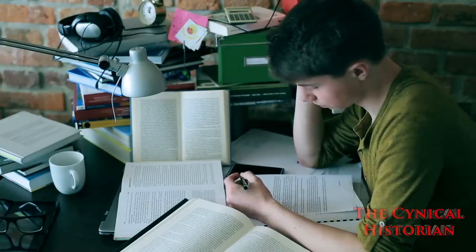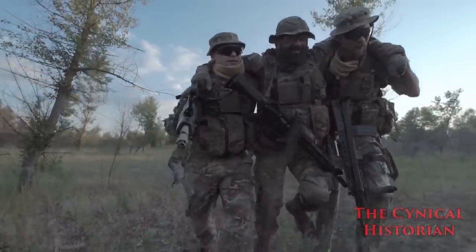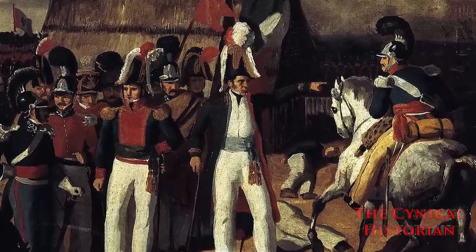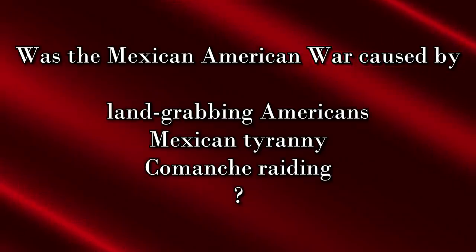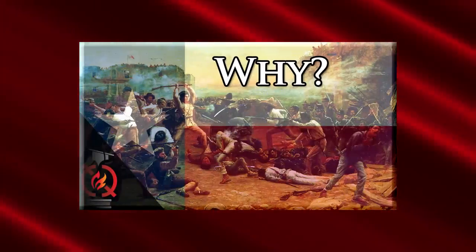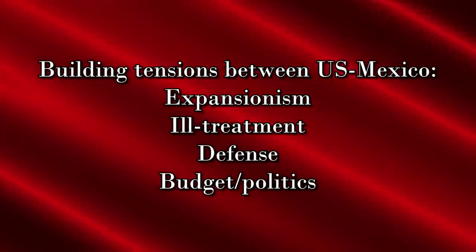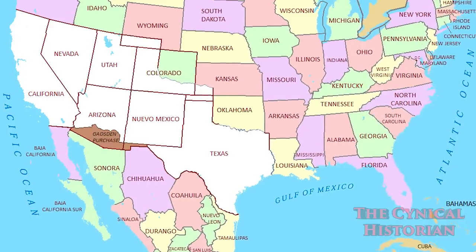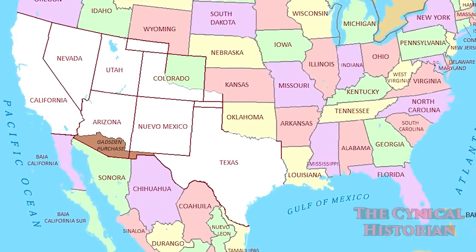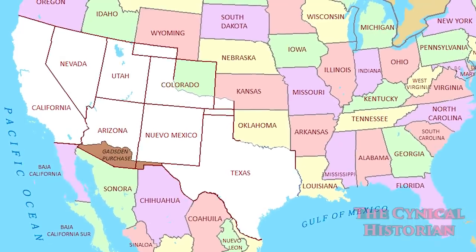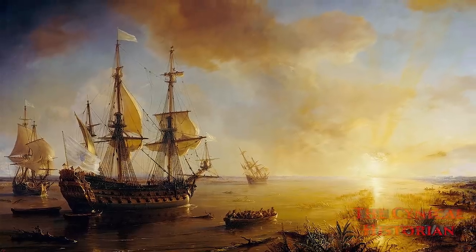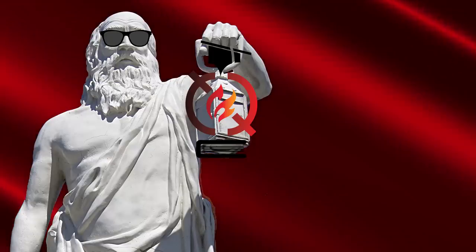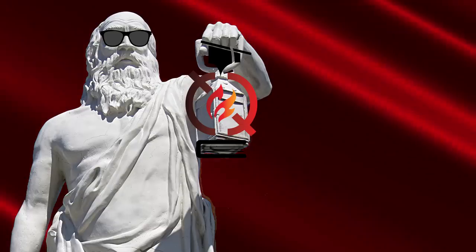That Civil War would ultimately be caused by arguments over slavery in the new territories, so understanding what caused the Mexican-American War is part of the issue surrounding the Civil War itself. As anyone studying warfare can tell you, there is no simple answer to the causes. Was it the US trying to grab land from Mexico? Was it a reaction to Mexican tyranny or Comanche raiding? Instead, we can see the buildup of tensions between the US and Mexico over expansionism, ill-treatment, defensive needs, and budgetary or political necessity. The annexation was not merely the taking of land, for it was paid for, and could have been much more if the US so chose. There was a long history of disputed territory, popular revolts, and aggression. No answer is adequate, but some are better than others. Which do you think is the strongest?